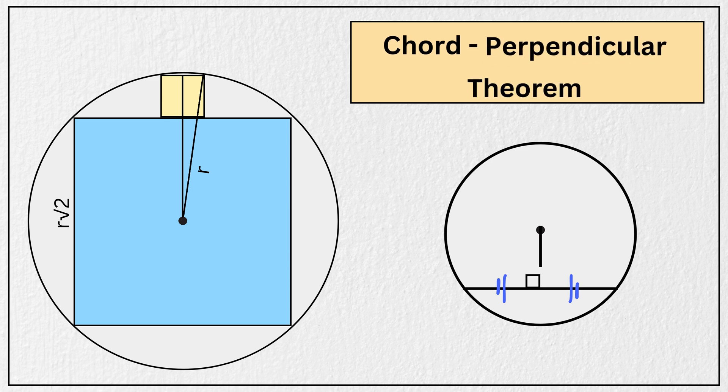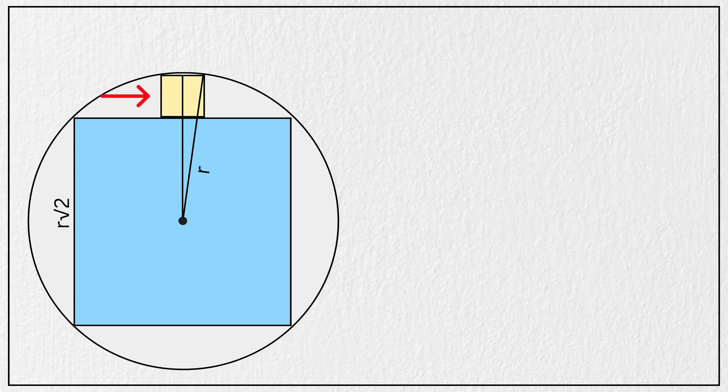According to the chord perpendicular theorem, this perpendicular line will bisect the bottom side of the small square, right? Let us call the side length of this yellow square as s. Since the bottom side is bisected, this length will be half of s, or s divided by two, and this vertical segment will be s plus half of the large square side length, which is r times the square root of two divided by two.